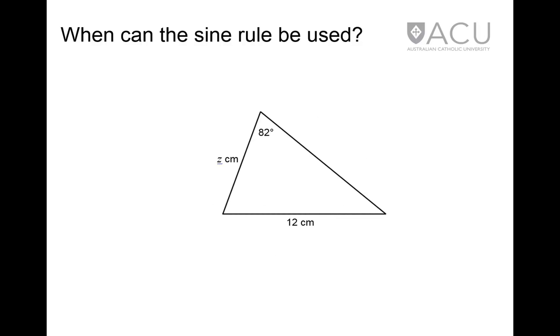In this triangle, the angle and its opposite side are known, but no other angles are known, nor is a second side known. So the sine rule cannot be used.